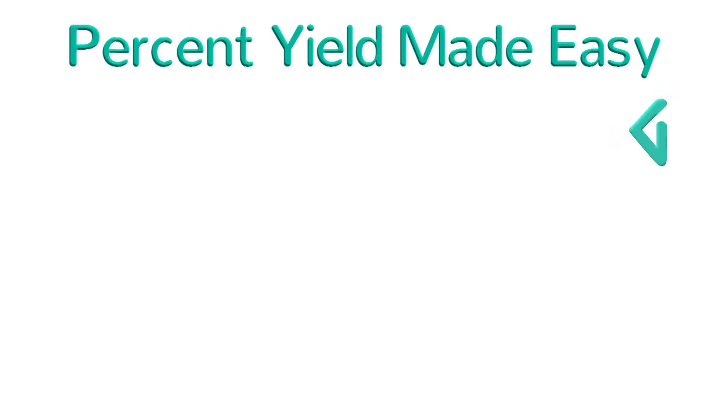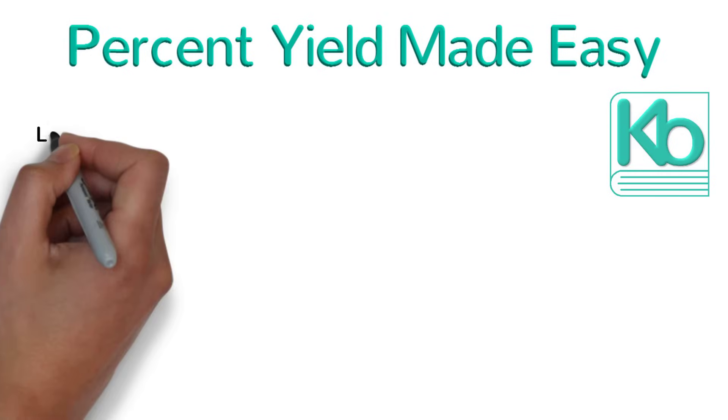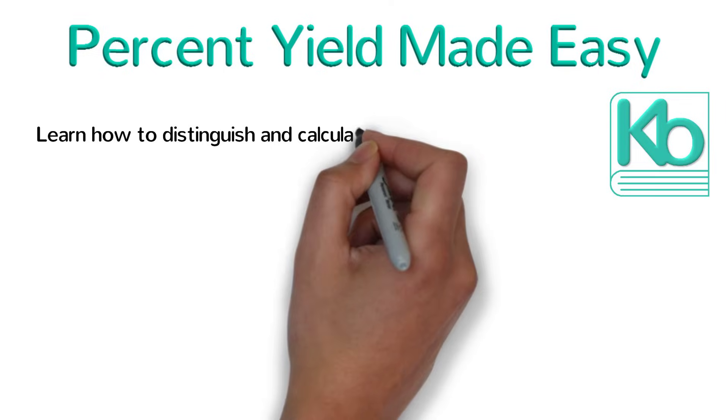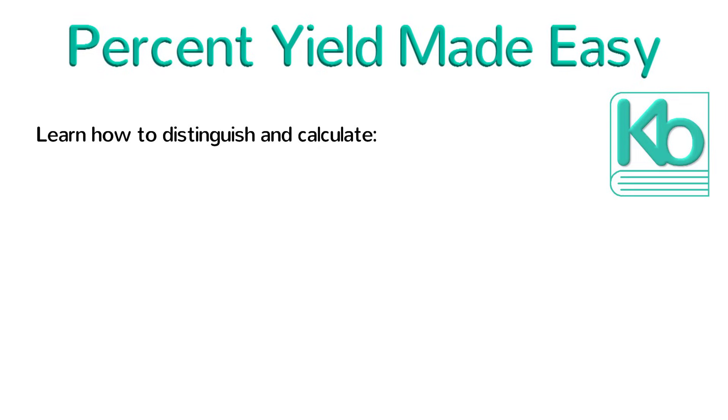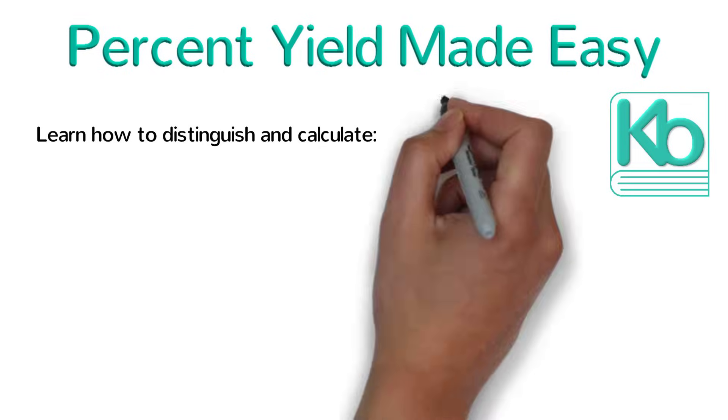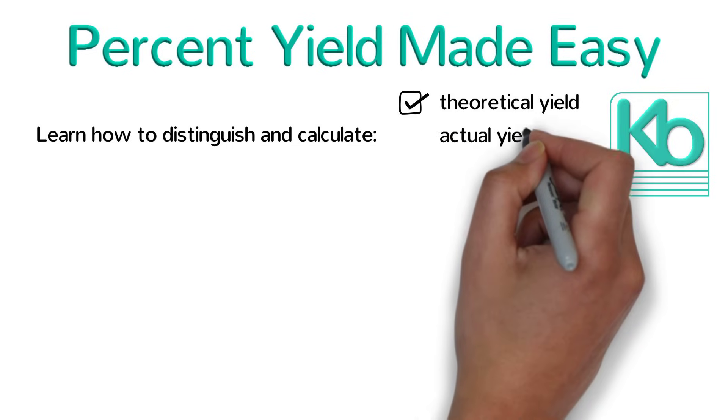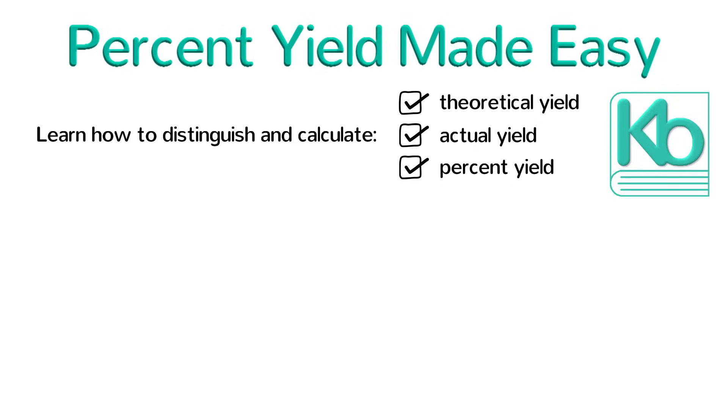Welcome to Percent Yield Made Easy, brought to you by Ketsbook. This is the fourth tutorial in my stoichiometry series, and in this video we will learn how to distinguish and calculate the three ways to quantify chemical reactions: theoretical yield, actual yield, and percent yield. To make this easier, let's start with an analogy.